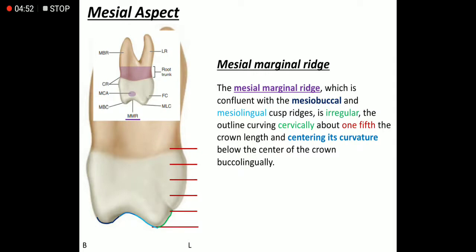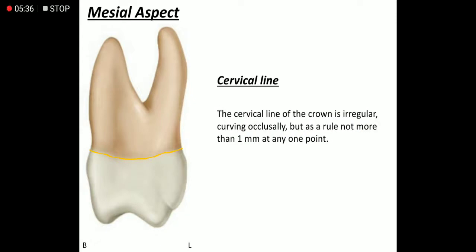The mesial marginal ridge is formed by the slopes of the mesolingual cusp and the mesobuccal cusp. Where these two cusp slopes join they form a curvature that moves in the cervical direction. As the mesial marginal ridge continues, it moves irregularly in the cervical direction to cover one-fifth of the crown — somewhere near the tip of the fifth cusp.